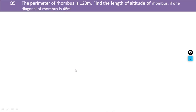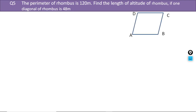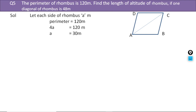Let us try another problem. In this question, the perimeter of a rhombus is given as 120 metres. Find the length of the altitude of the rhombus if one of the diagonals is 48 metres. We will find the sides of the rhombus first. Let the side of the rhombus be 'a' metres. Perimeter is 120, so a = 30 metres.